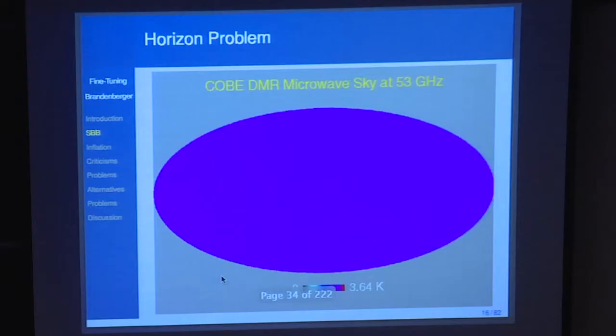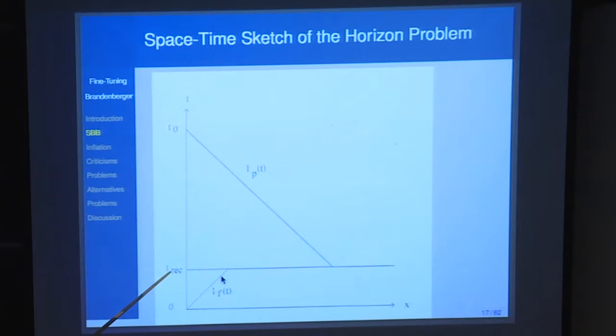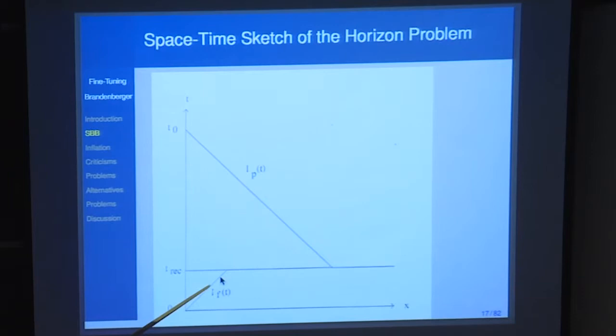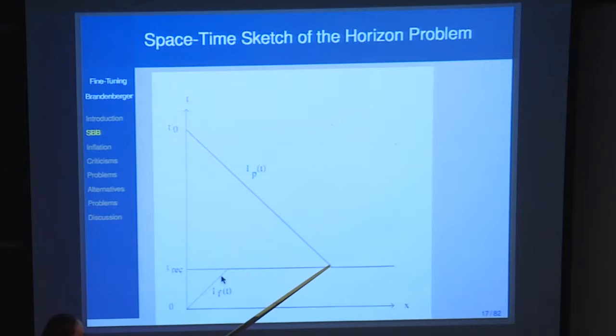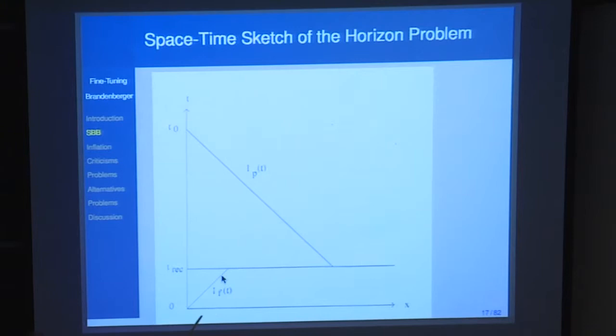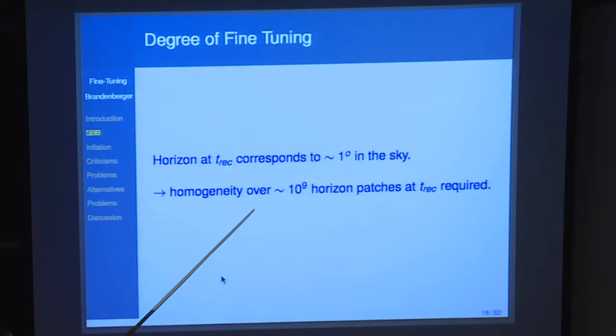The fine-tuning problems of standard Big Bang cosmology: the isotropy of the microwave background is released about 300,000 years after the Big Bang at the surface of last scattering. In standard Big Bang cosmology, the zone of causal influence only extends to about one degree in the sky, as opposed to 180 degrees. We might be able to explain the same temperature over a small region, but never over the full sky. There are roughly 10 to the 9 patches of the current sky that we need to explain — a fine-tuning problem of one part in 10 to the 9.